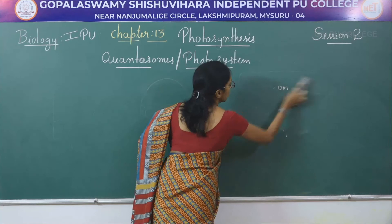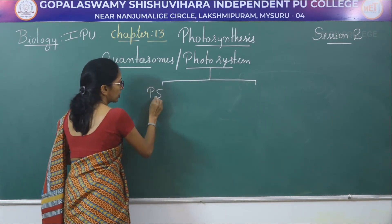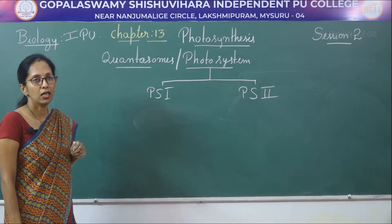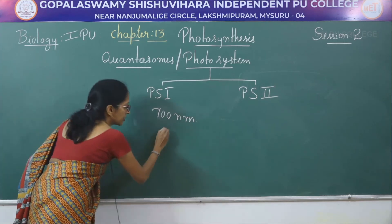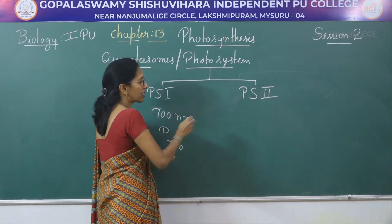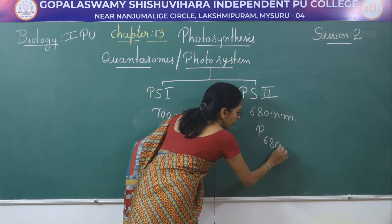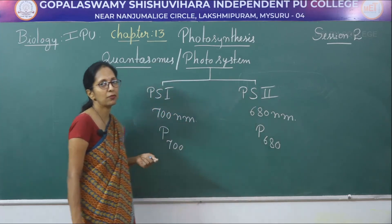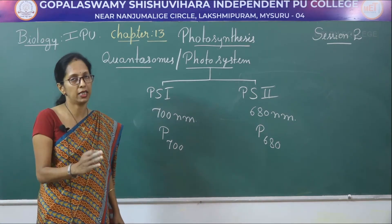There are two types of photosystem. Photosystem 1 has maximum absorption of light at 700 nanometer wavelength, therefore its reaction center is called P700. Photosystem 2 has maximum absorption at 680 nanometer wavelength, therefore its reaction center is called P680.